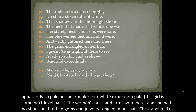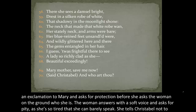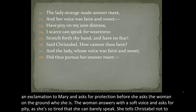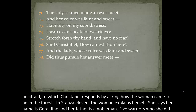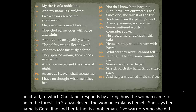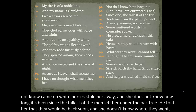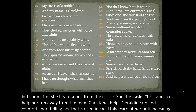In stanzas eight and nine, Christabel sees a woman in a white robe who is apparently so pale that her neck makes the white robe seem pale by comparison. The woman's neck and arms are bare, she has no shoes, but she has gems and jewelry tangled in her hair. Christabel asks for protection before asking who the woman is. The woman answers softly, asking for pity as she's so tired she can barely speak. In stanza eleven, the woman explains herself — her name is Geraldine, her father is a nobleman, and five warriors she did not know came on white horses and stole her away.